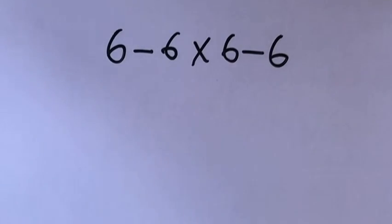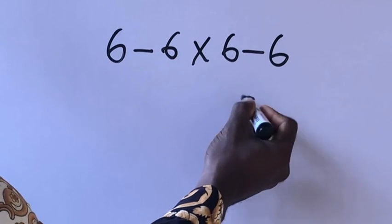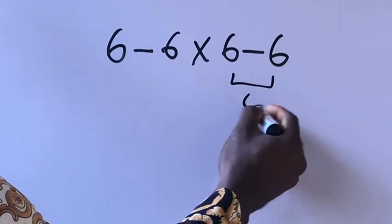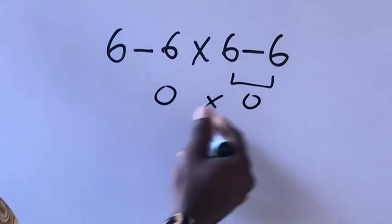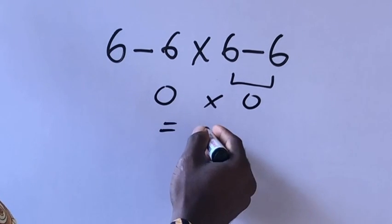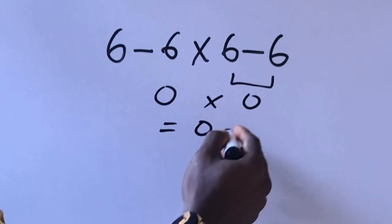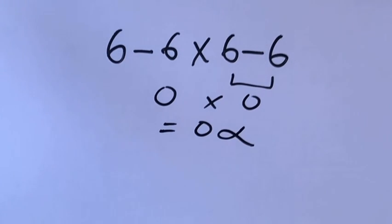Hi guys, pay attention to this mastery. Six minus six times six minus six. Zero times zero equals what? Zero. But this answer is not correct according to order of operation.